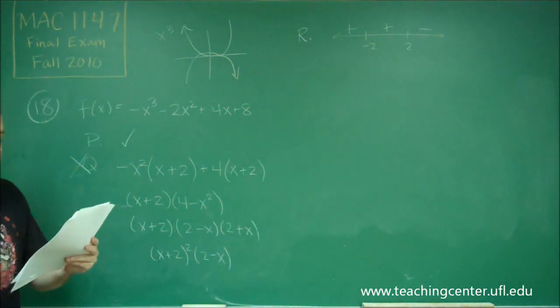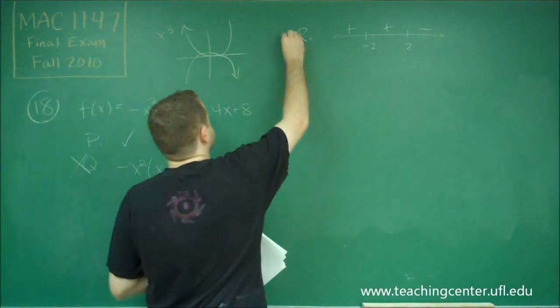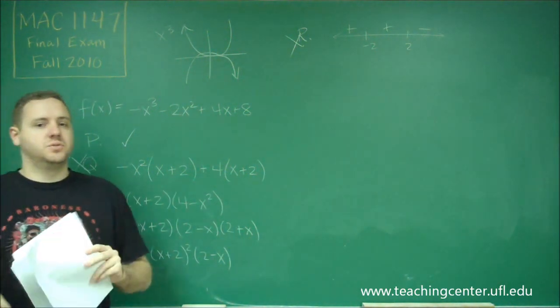So statement R says that it's above the x-axis on negative 2 to 2 only. So that is false. We have that only statement P is true for this problem.